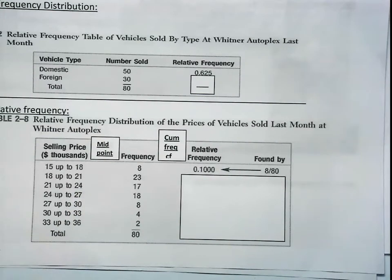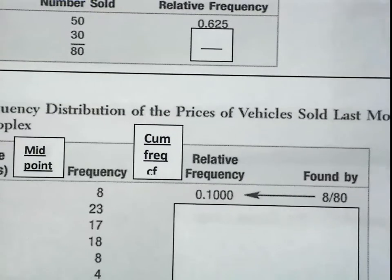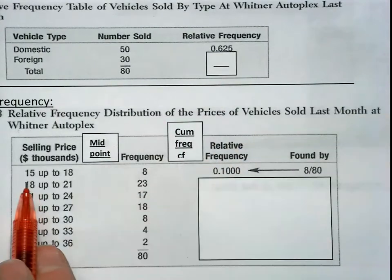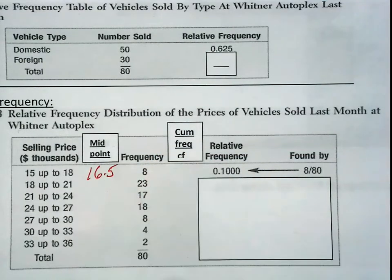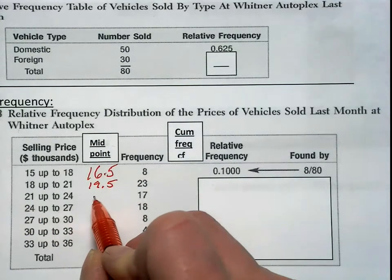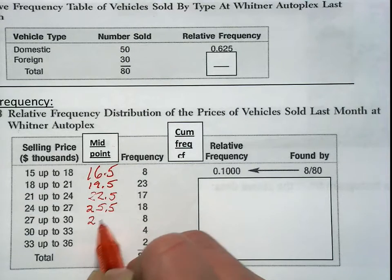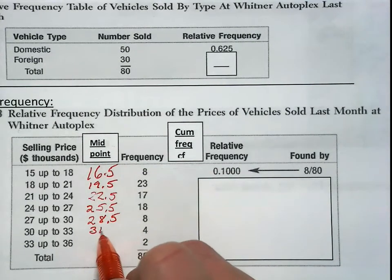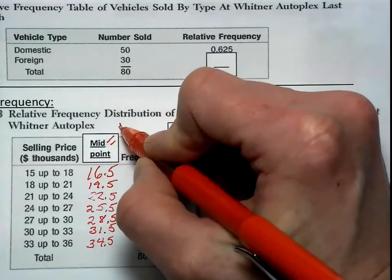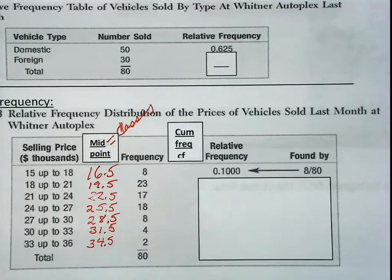Now, our midpoint. As you can see here — midpoint is the midpoint of the class. So between 15 and 18, our midpoint is 16.5. Midpoint between 18 and 21 is 19.5. 21 to 24 is 22.5, then 25.5, 28.5, 31.5, 34.5. So midpoint is the midpoint between classes. You can add 18 plus 15 divided by 2 if you can't do it in your head.